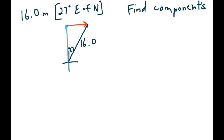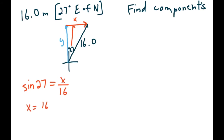Our components would be a north component and an east component. East of north means we went north first and then to the east. Now all we have to do is figure out what each of those sides are using regular trig. We have the opposite and adjacent sides, so let's call the adjacent vertical side y and the horizontal side x.